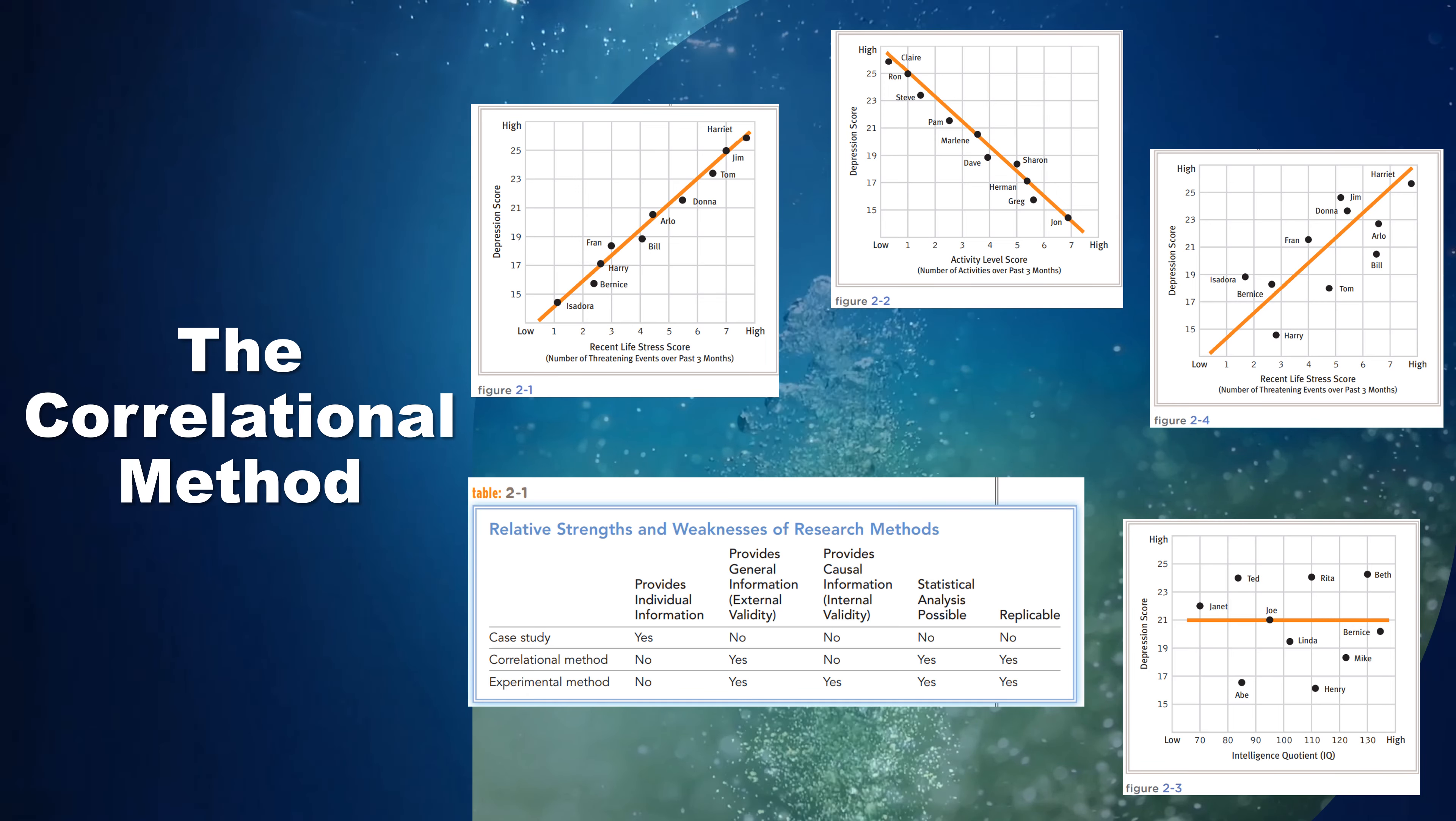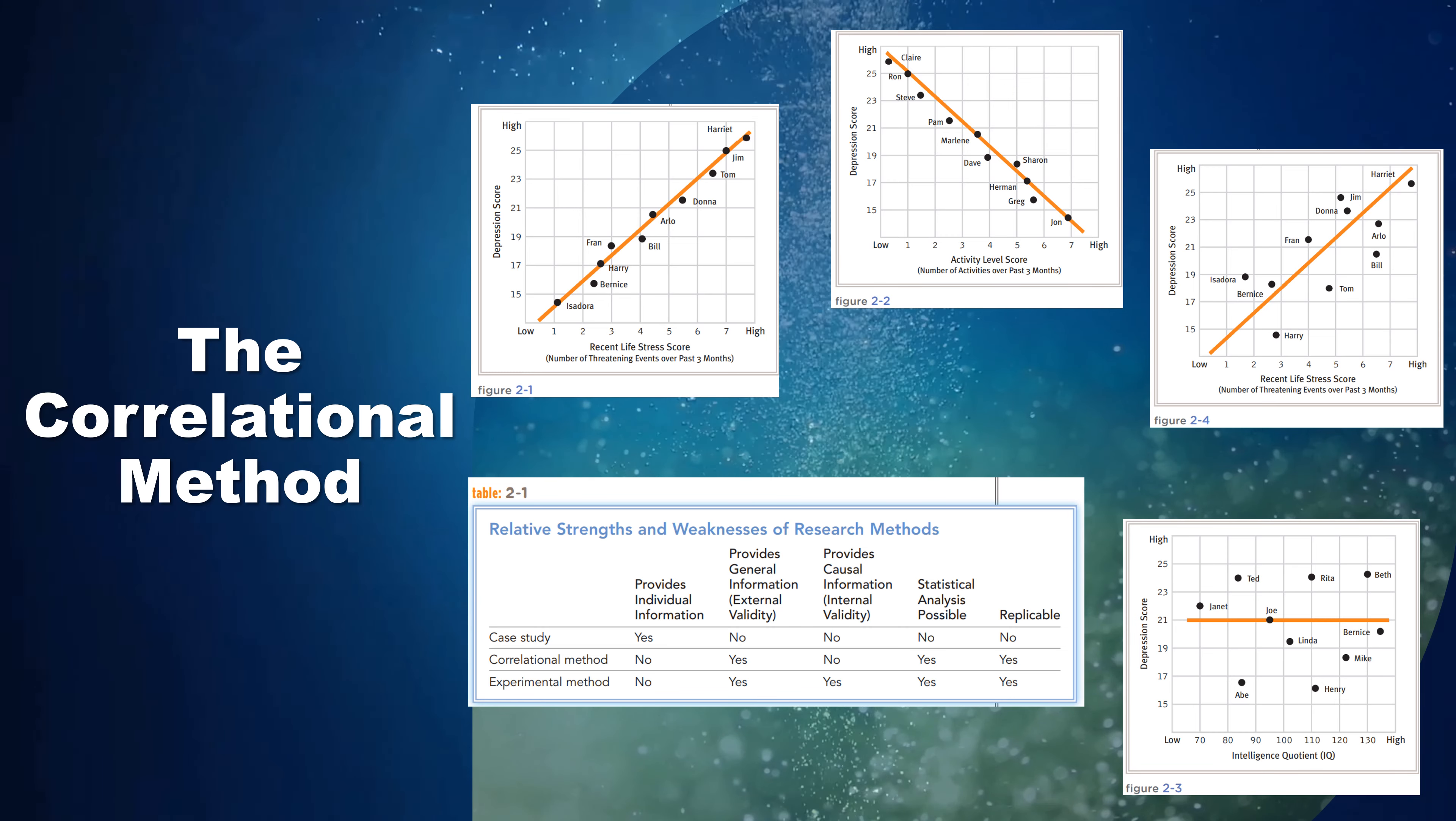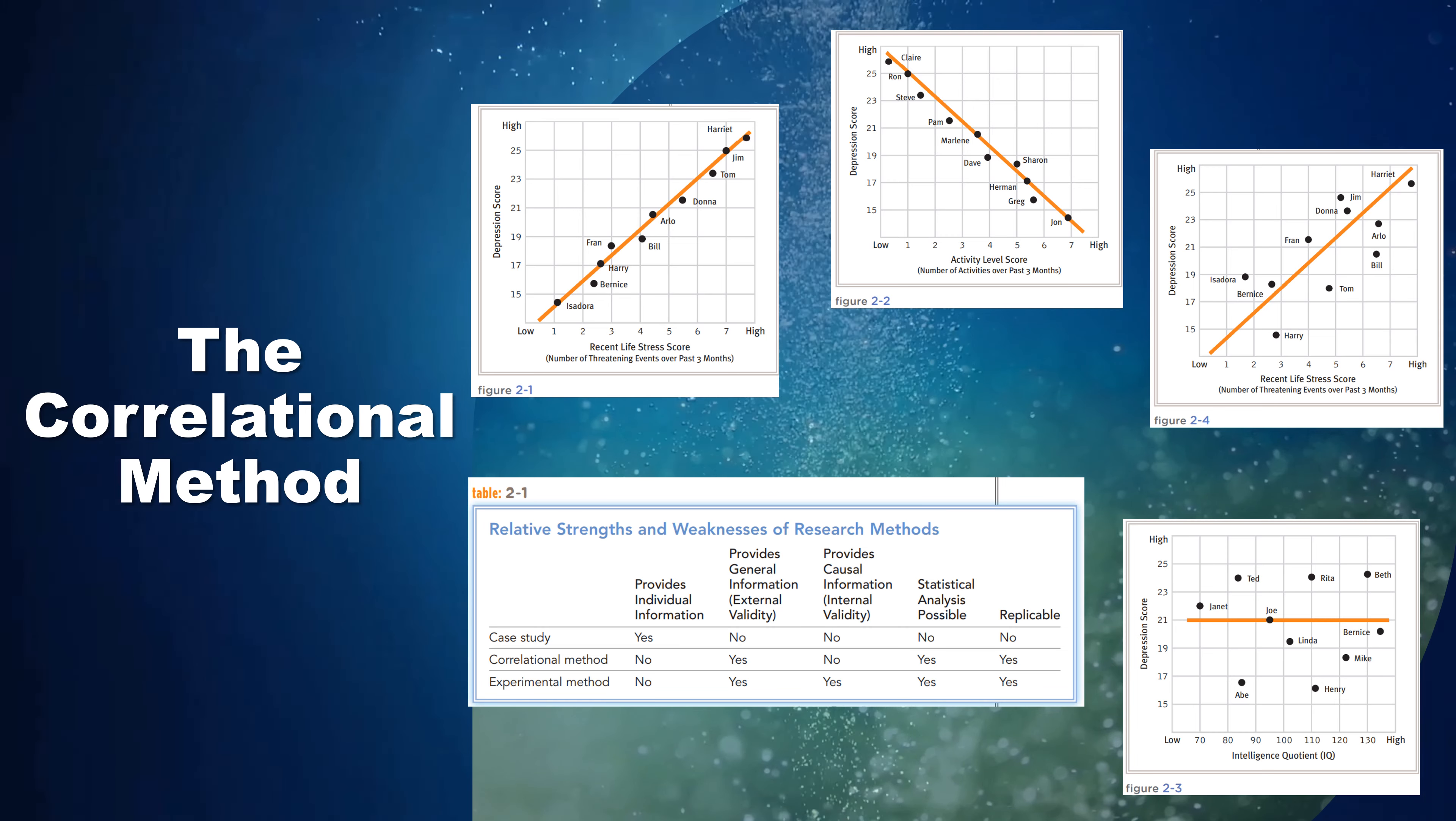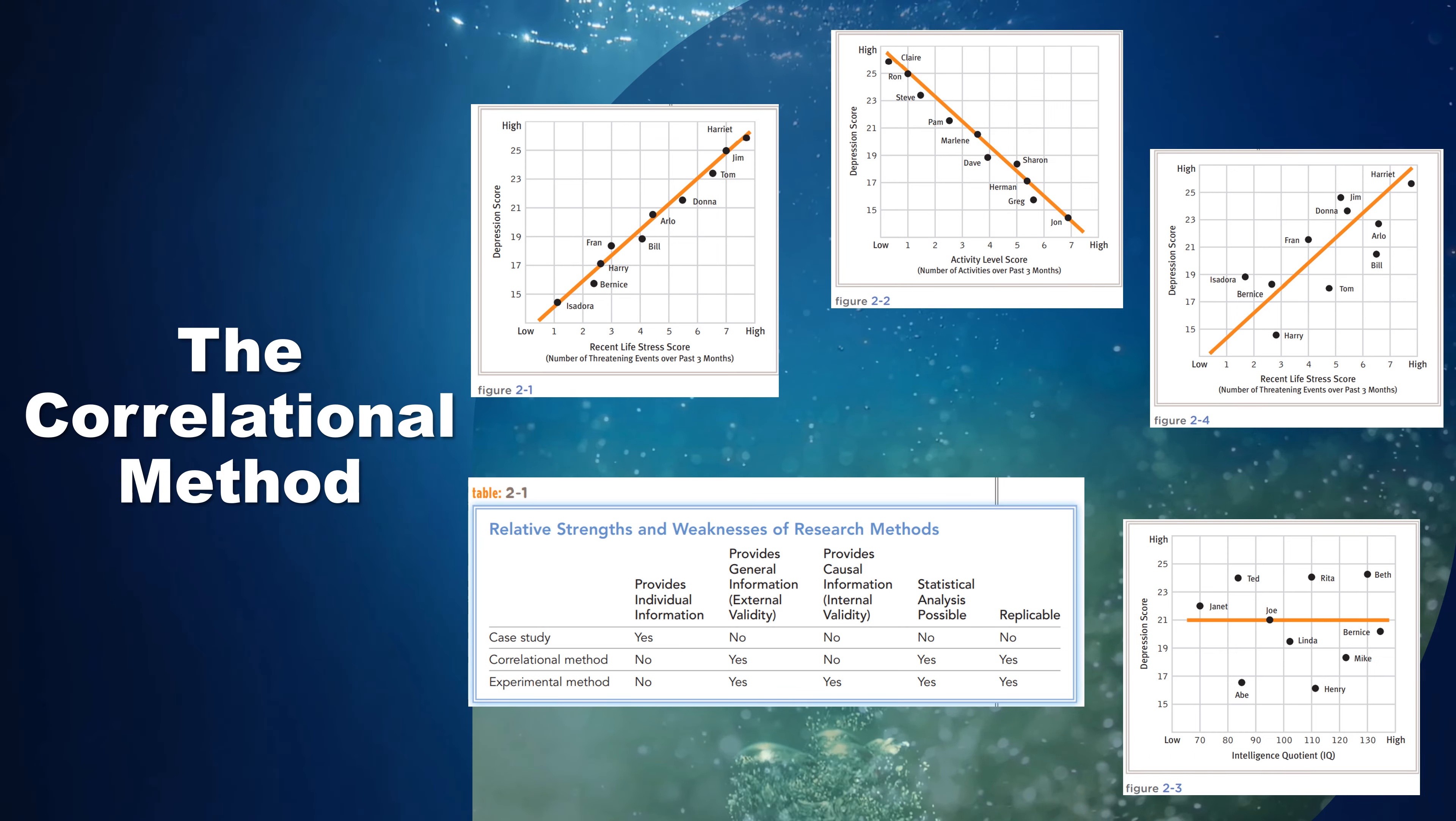Furthermore, researchers can easily repeat correlational studies using new samples of participants to check the results of earlier studies. On the other hand, correlational studies, like case studies, lack internal validity. Although correlations allow researchers to describe the relationship between two variables, they do not explain the relationship.